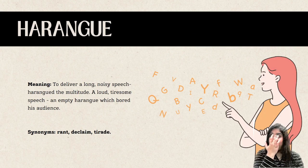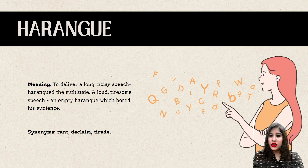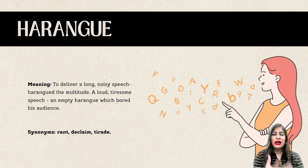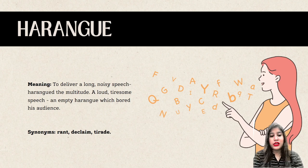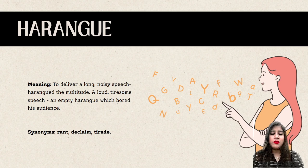Harangue means to deliver a long noisy speech, or a long tiresome speech that is boring. Example: 'An empty harangue which bored his audience.' It means to blabber or give a very long, exhausting lecture. Synonyms would be rant, declaim, and tirade.